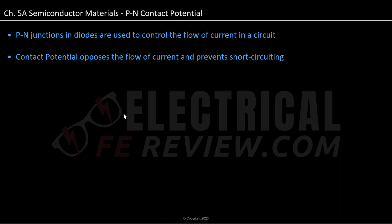Hello and welcome to today's video on electrical materials, where today we'll be covering PN contact potential. PN junctions and diodes are used to control the flow of current in a circuit, and we can define contact potential to oppose the flow of current and prevent short circuiting.